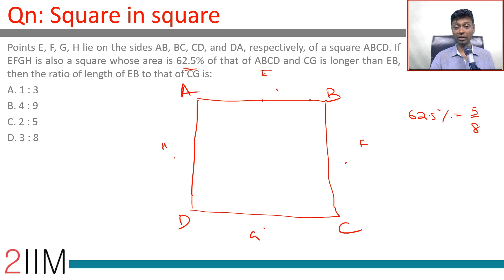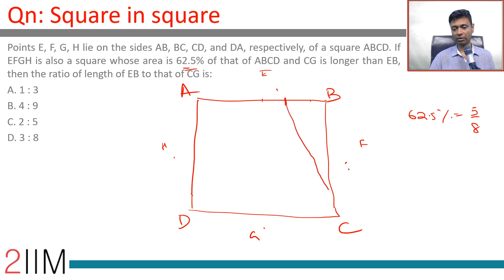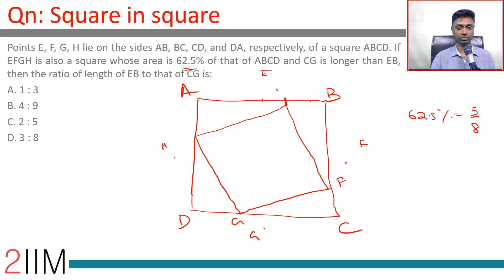Now, EFGH could be right in the middle or somewhere in the corner. Remember, for EFGH to be a square, this has to be a symmetric figure inside. We know EB is shorter than CG, so if E is here, F here, G here, and H here, this would be a square. We want to find the ratio of the length of EB to that of CG.